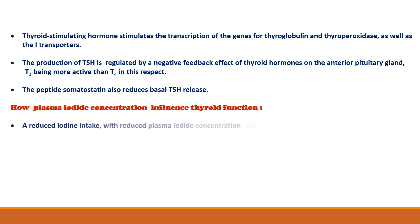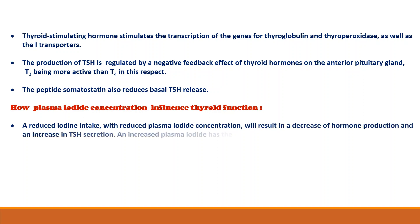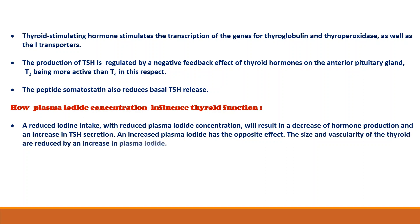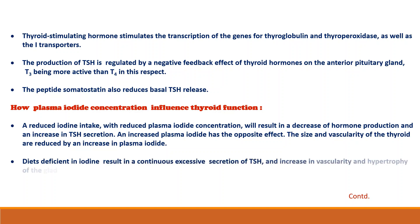Now let's see how plasma iodide concentration influences thyroid function. A reduced iodide intake with reduced plasma iodide concentration will result in a decrease of hormone production and an increase in TSH secretion. An increased plasma iodide has the opposite effect. The size and vascularity of the thyroid are reduced by an increase in plasma iodide. A diet deficient in iodine results in a continuous excessive secretion of TSH and increases vascularity and hypertrophy of the gland, which is called goiter.